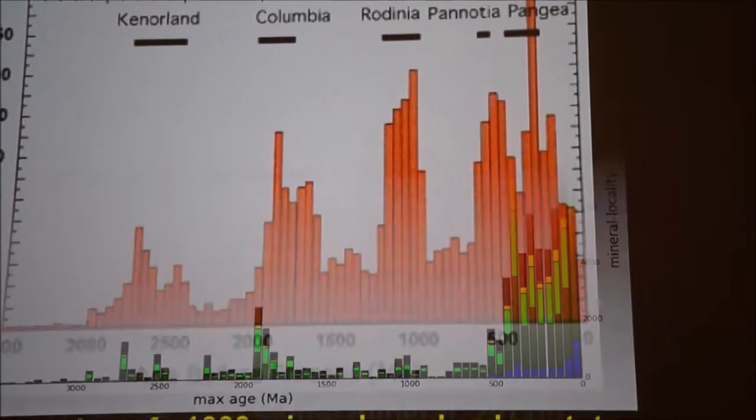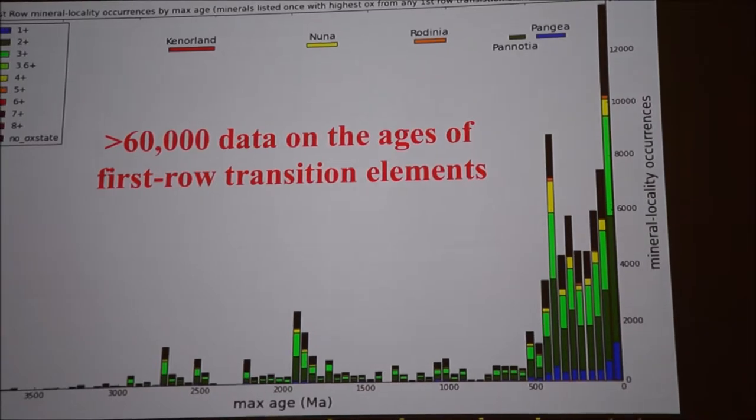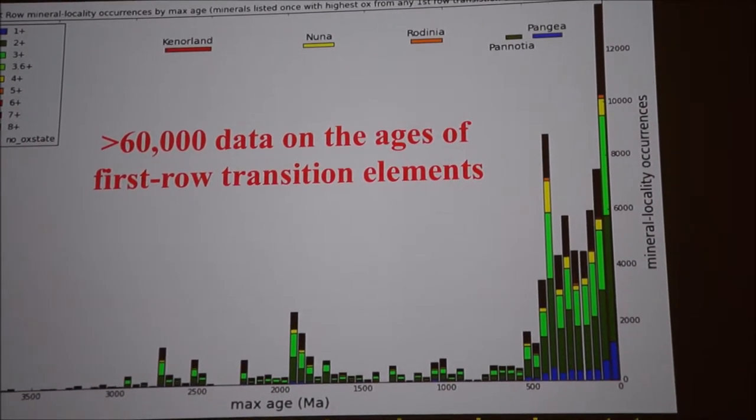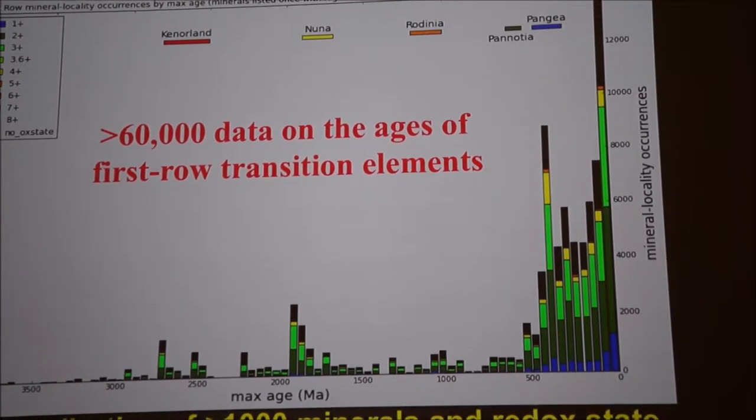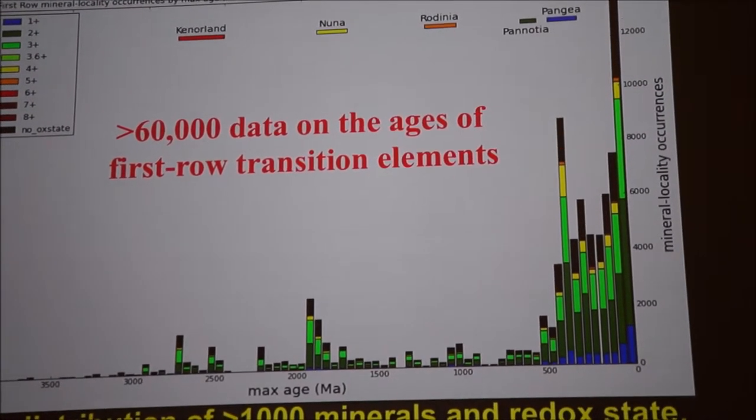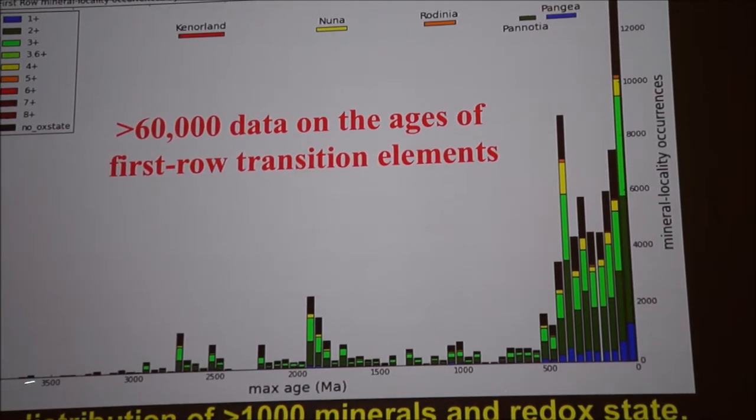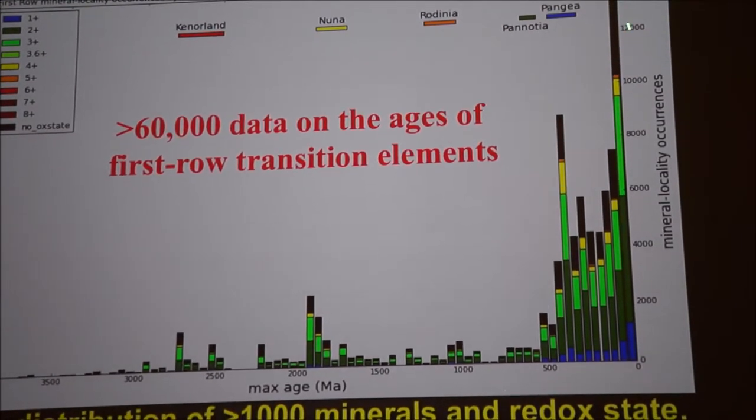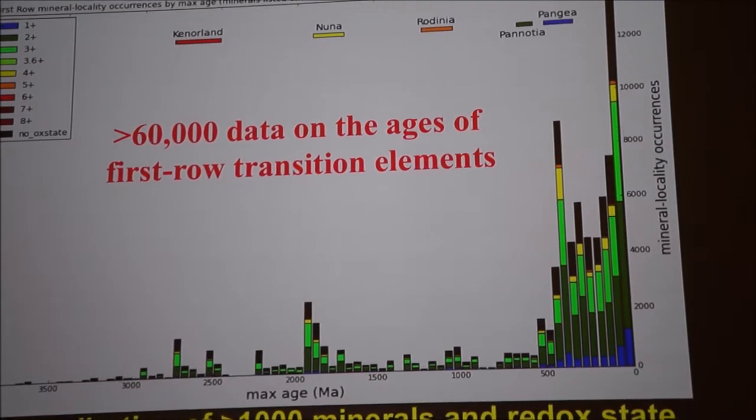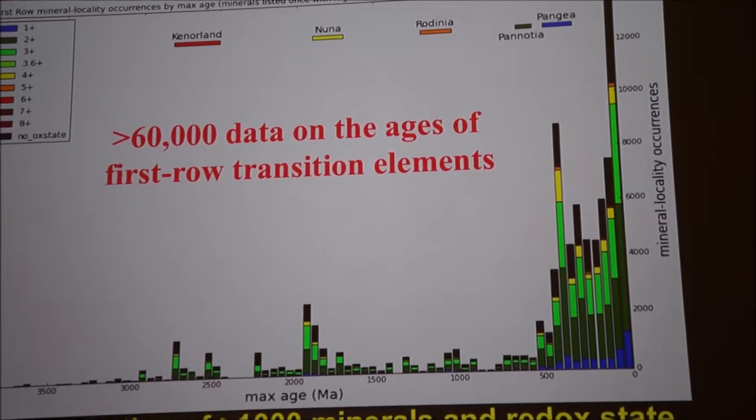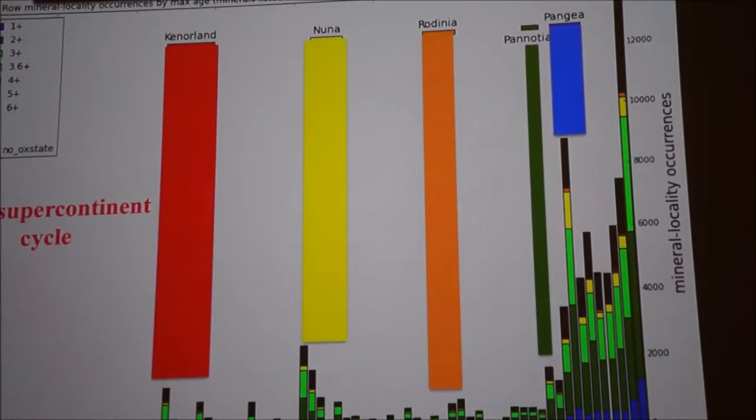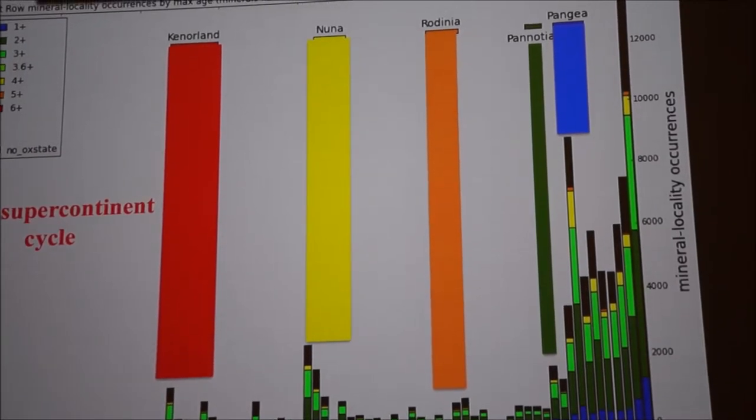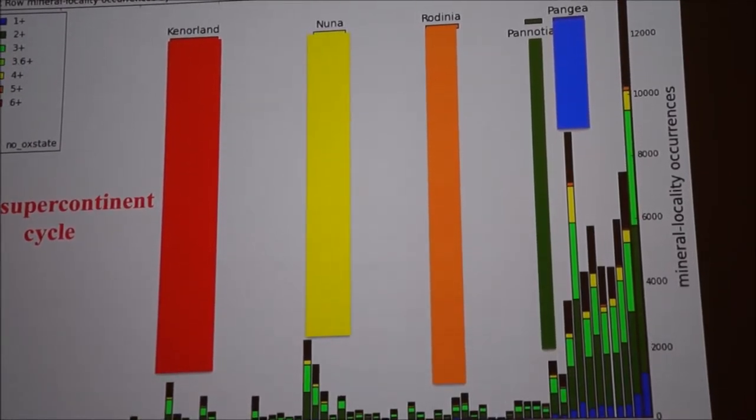One can now accumulate lots and lots of data. Here now are literally thousands of different minerals containing one or more of the first row transition elements, elements that are important in biology and certainly important economically. And what we see here, going again through billions of years of Earth history, you see the number of mineral occurrences that are binned here, in this case 50 million year bins. There's a whole variety of trends that we can see.